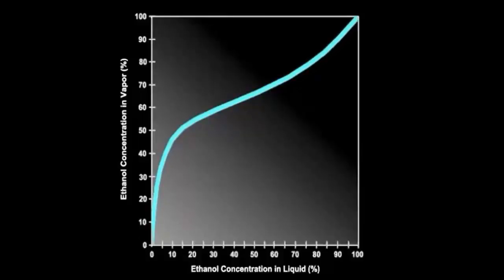If the fraction of ethanol molecules is zero in the mixture, the liquid is pure water and the fraction of ethanol in the vapor is zero. If the fraction of ethanol molecules is 100% in the mixture, the liquid is pure ethanol and the fraction of ethanol in the vapor is also 100%.